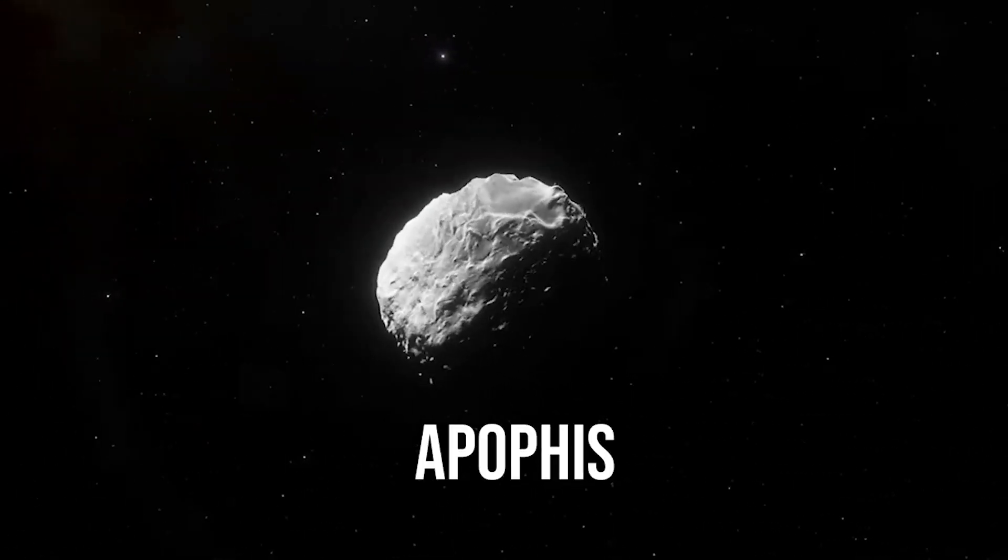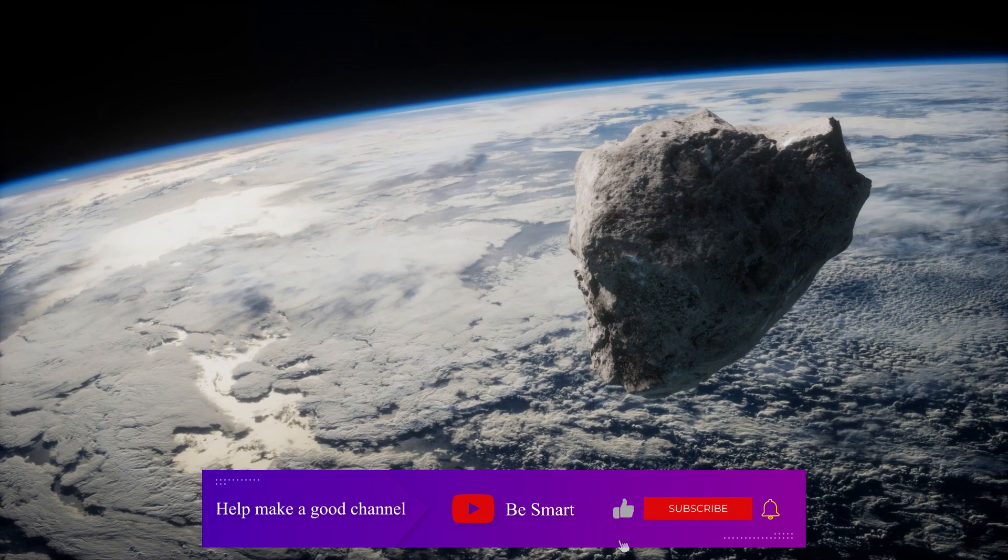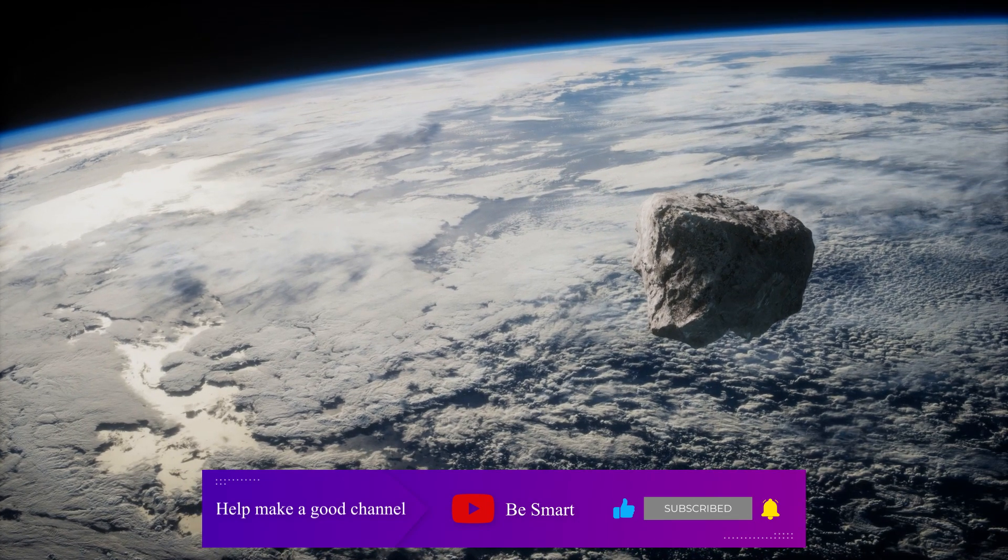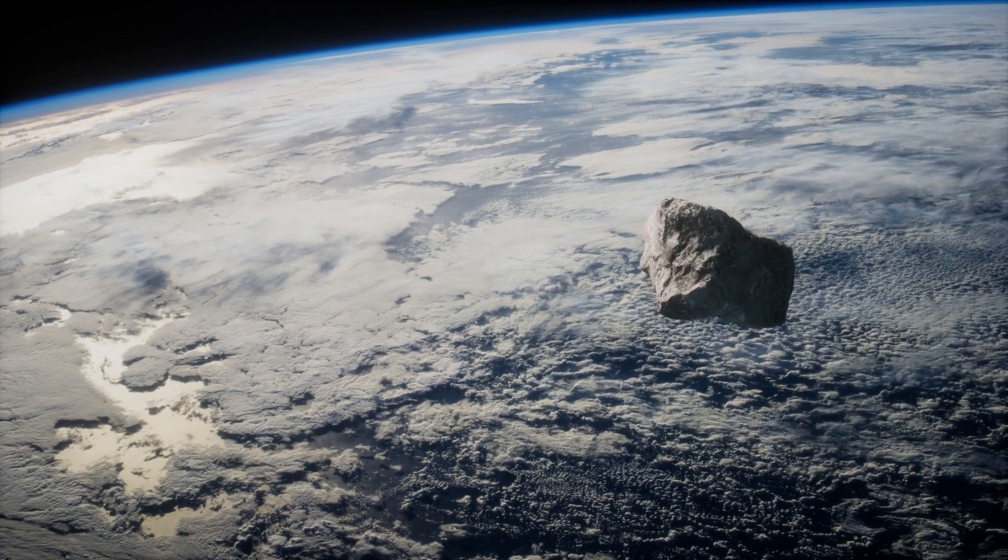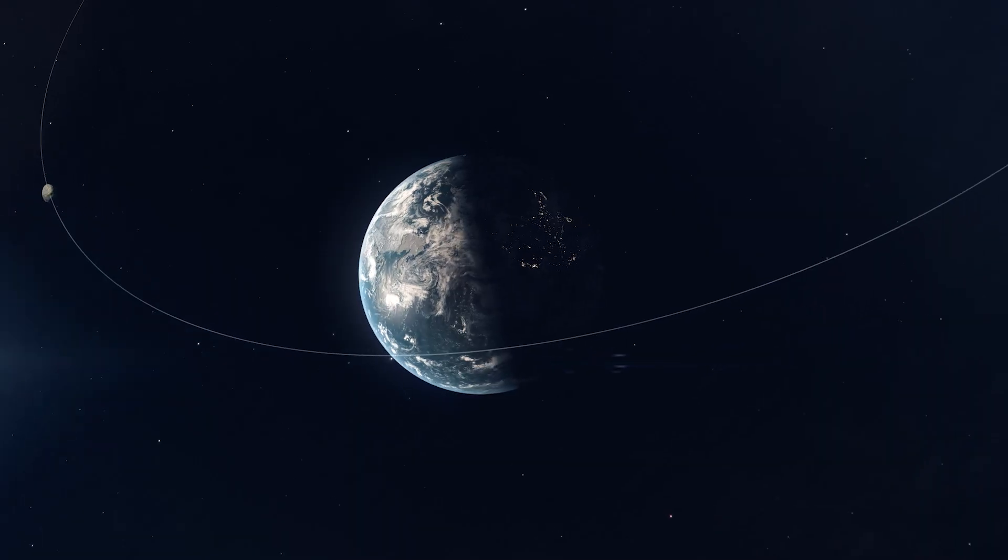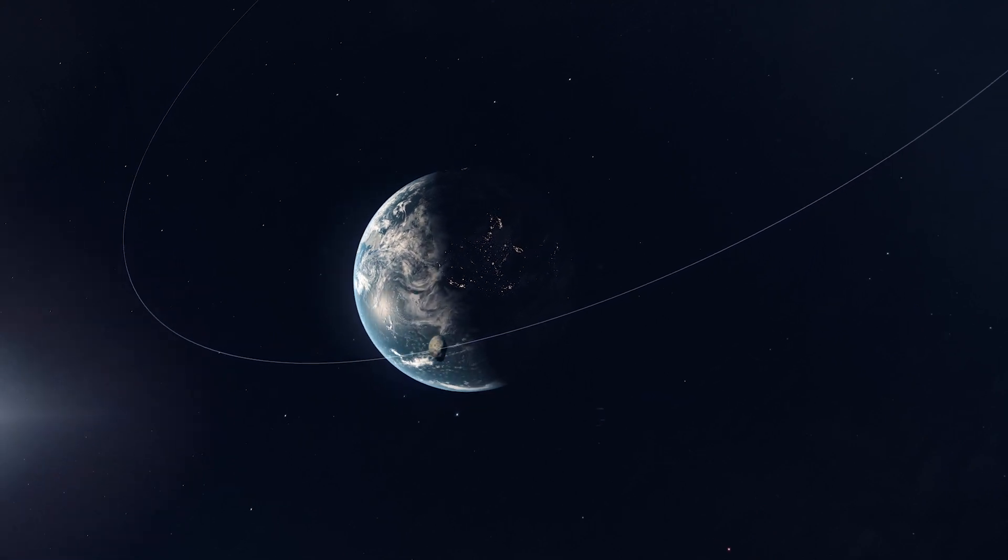Apophis is an asteroid that became notorious in 2004 as a potential threat to Earth. Also known as Asteroid 99942, the near-Earth object is estimated to be about 1,100 feet across and could cause serious damage to the planet's surface if it were to hit.